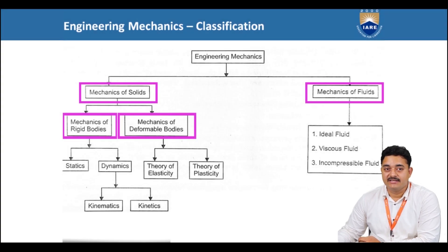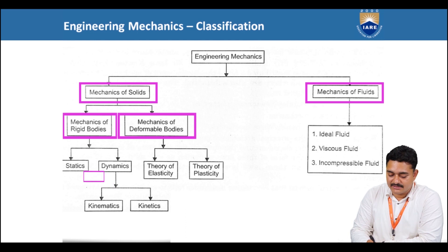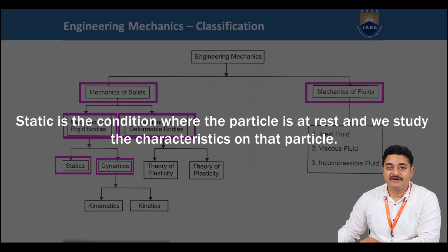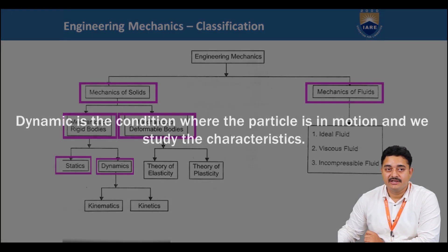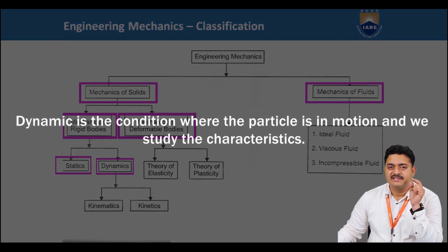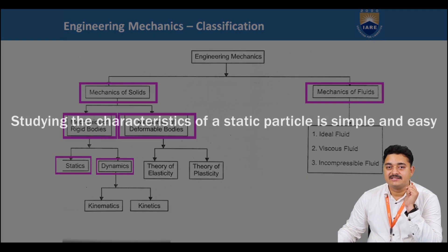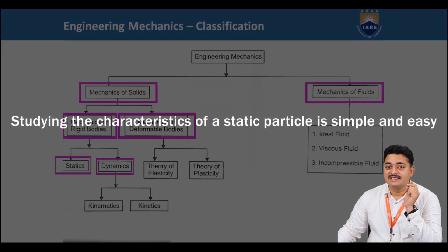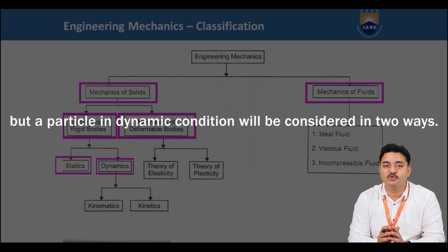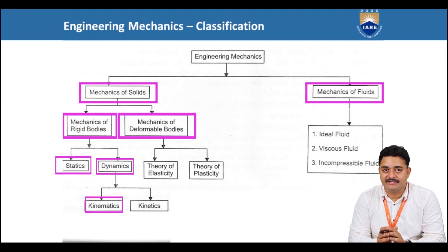In rigid body mechanics, we have statics and dynamics. Statics is the condition where the particle is at rest and we study the characteristics of that particle, whereas dynamics is the condition where the particle is in motion and we study the characteristics. A particle in dynamic condition will be considered in two ways: kinematics and kinetics.